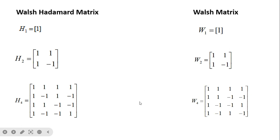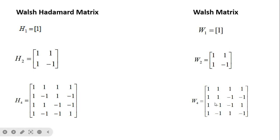There is a difference between H4 and W4. For W4, we first take the row with zero sign changes, then the row with one sign change. The row 1,1,-1,-1 represents one sign change: positive to negative, only one change. Next we require two sign changes, so we take the row 1,-1,-1,1: one sign change from plus to minus, then minus to plus — so two sign changes.